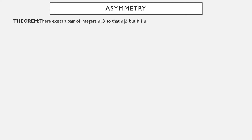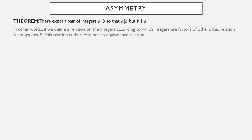We've shown that the factoring relationship is reflexive and transitive, so it's natural to ask: is it symmetric? No. There are a pair of integers a and b so that a is a factor of b but b is not a factor of a. So this relationship isn't symmetric, and therefore factoring is not an equivalence relation — while it is reflexive and transitive, it's not symmetric.